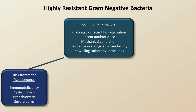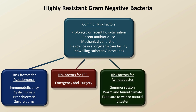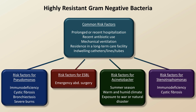Species-specific risk factors for Pseudomonas include immunodeficiency, cystic fibrosis, bronchiectasis, and severe cutaneous burns. Risk factors for ESBL are emergency abdominal surgery. Acinetobacter shows significant seasonal and geographic variation, being most common in summer and in warm and humid climates; exposure to war or natural disasters has also been found to be a risk factor. And risk factors for Stenotrophomonas include immunodeficiency and cystic fibrosis.